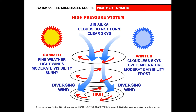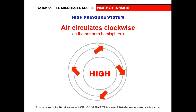At the surface the air sinks and diverges — it comes down and spreads out. Looking at it on the surface, air circulates clockwise in the northern hemisphere and comes out of the high pressure system. Drawing lines on the circles — those circles are lines of equal pressure called isobars — the air comes out at about 20 degrees from the isobar on average.